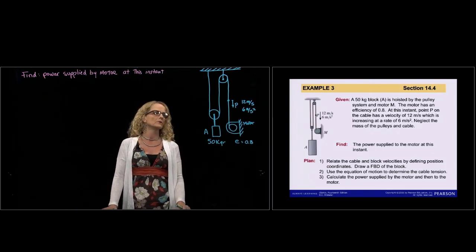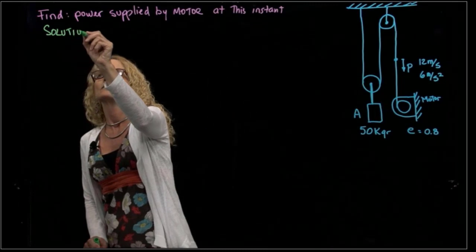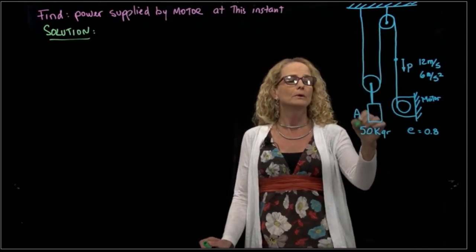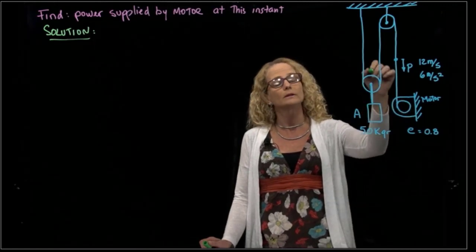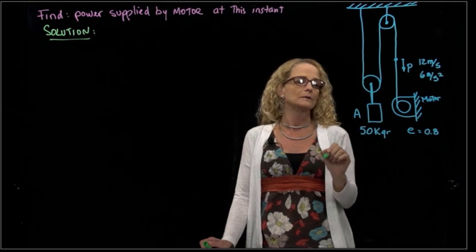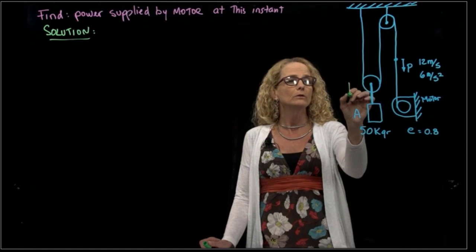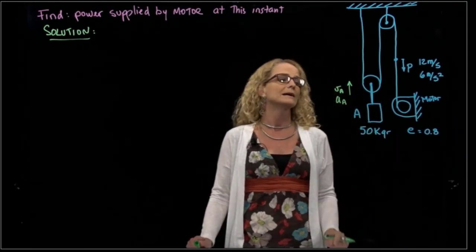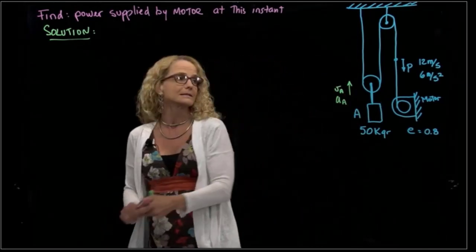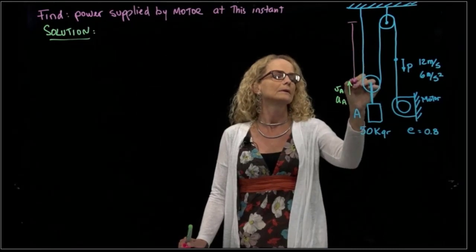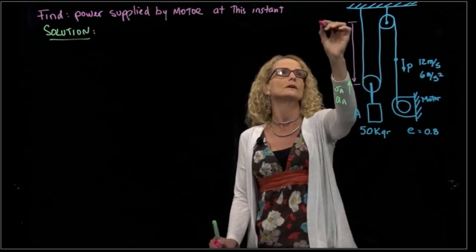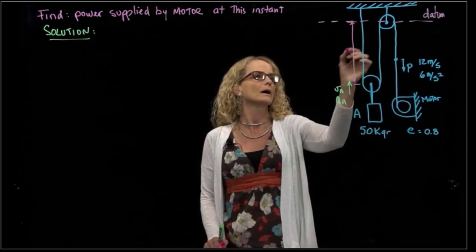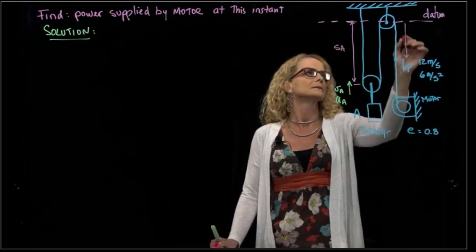So what are the steps we want to follow? The solution: the first thing we have to do when we have a pulley system is to relate our velocities. We have the velocity of P and we want to find the velocity of A because that motor is pulling that 50-kilogram box or weight. We need to find the velocity of A and the accelerations because forces are related to accelerations. Let's put a datum, a reference frame right here.